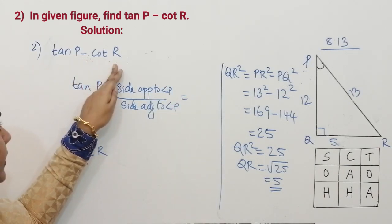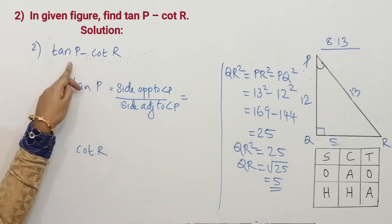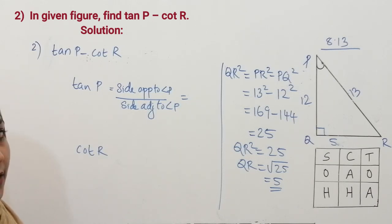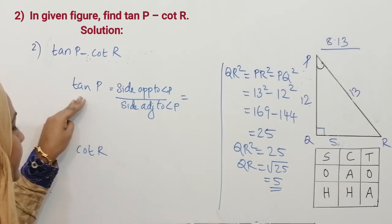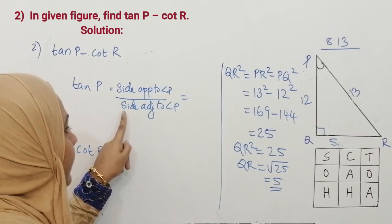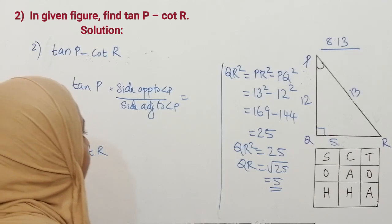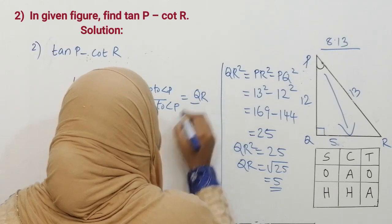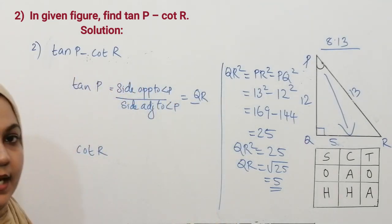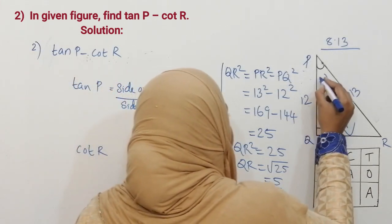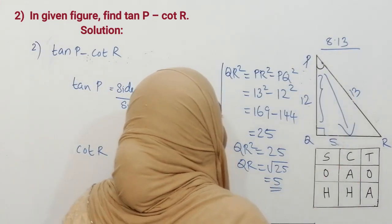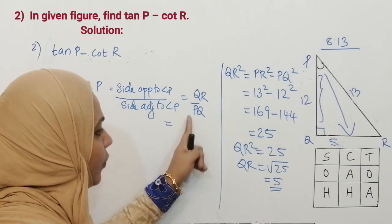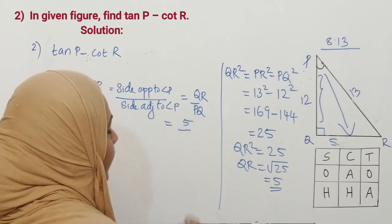We have to find two trigonometric ratios. In the first part of this question our reference angle is P; in the second part our reference angle is R, so you should be very careful. Tan P equals the side opposite to angle P divided by the side adjacent to angle P. QR is opposite to angle P, and the adjacent side — the side containing the 90-degree angle and the reference angle — is PQ. QR is 5 and PQ is 12.